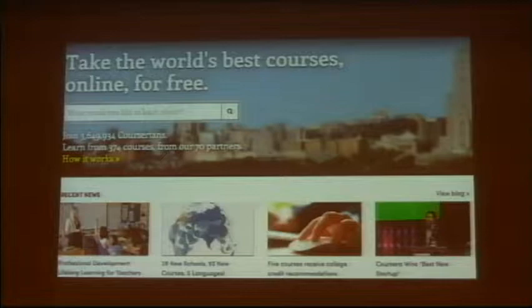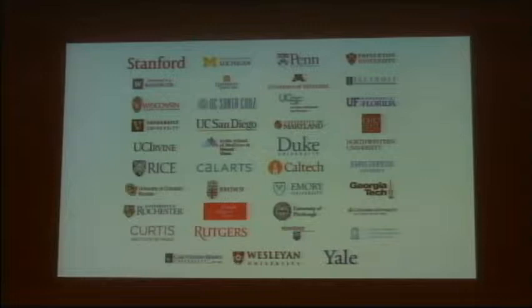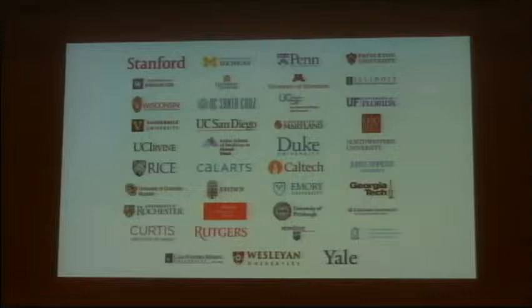Let me talk about some of these statistics. These are the U.S. universities working with us — some of this country's finest, both public and private, all contributing some of their best courses to teach the world. You can see our first four founding partners: Stanford, Princeton, Penn, and Michigan, several of the UC campuses, Duke, Johns Hopkins, Caltech, and many others, as well as some specialty schools including two music schools and an art school.